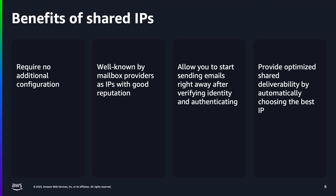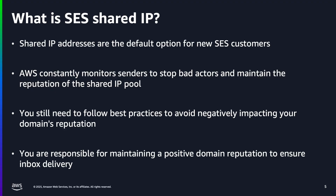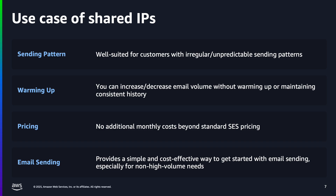SES takes precautions to protect your domain's reputation, SES IP reputation, and to prevent other SES users from experiencing service interruptions and deliverability issues. You will also need to maintain a positive domain reputation to ensure that your email communications reach your intended audience's inboxes. Shared IP addresses are well-suited for customers with irregular or unpredictable sending patterns, as you can increase or decrease your email volume as needed without having to worry about warming up or maintaining a consistent sending history. Shared IP addresses don't incur any additional monthly costs beyond the standard SES pricing. Overall, shared IP addresses provide a simple and cost-effective way to get started with email sending through Amazon SES, especially if you don't have predictable high-volume sending needs.